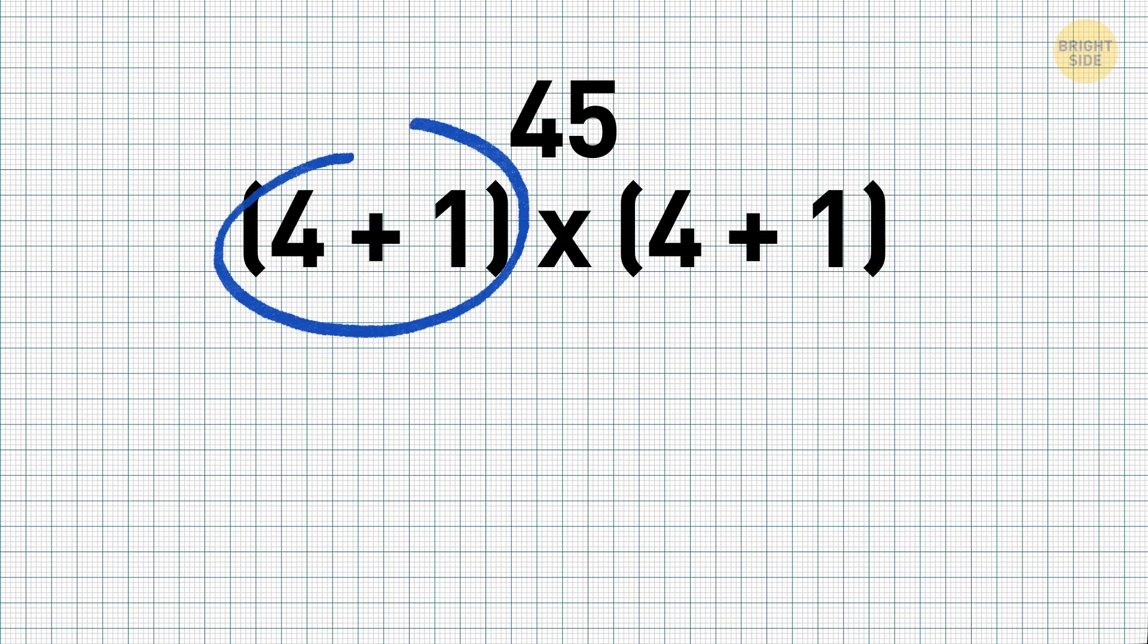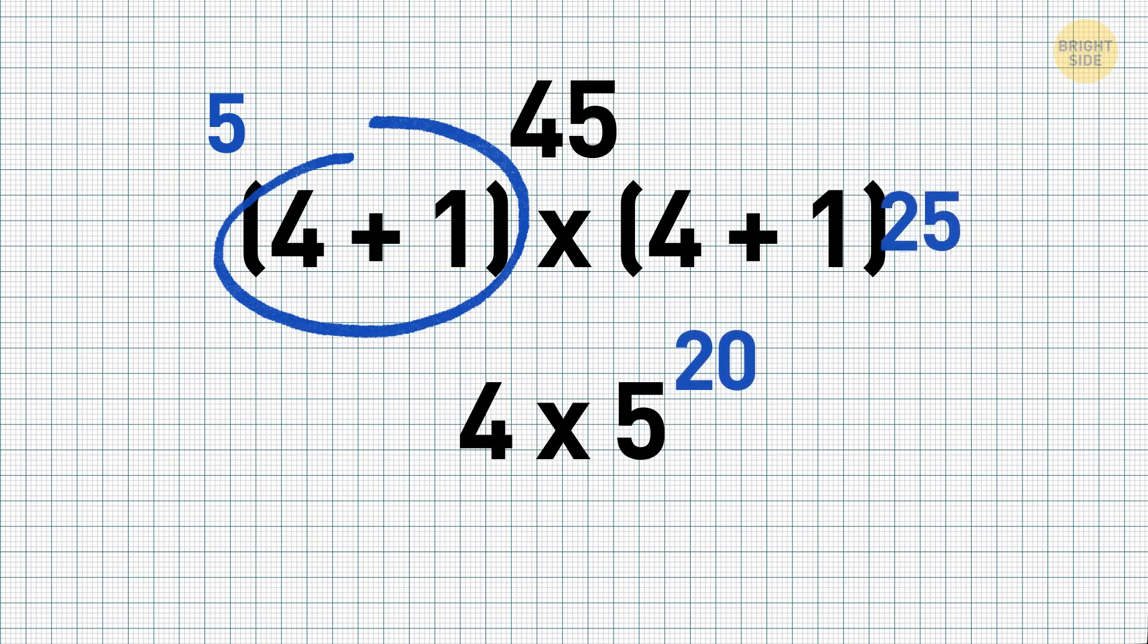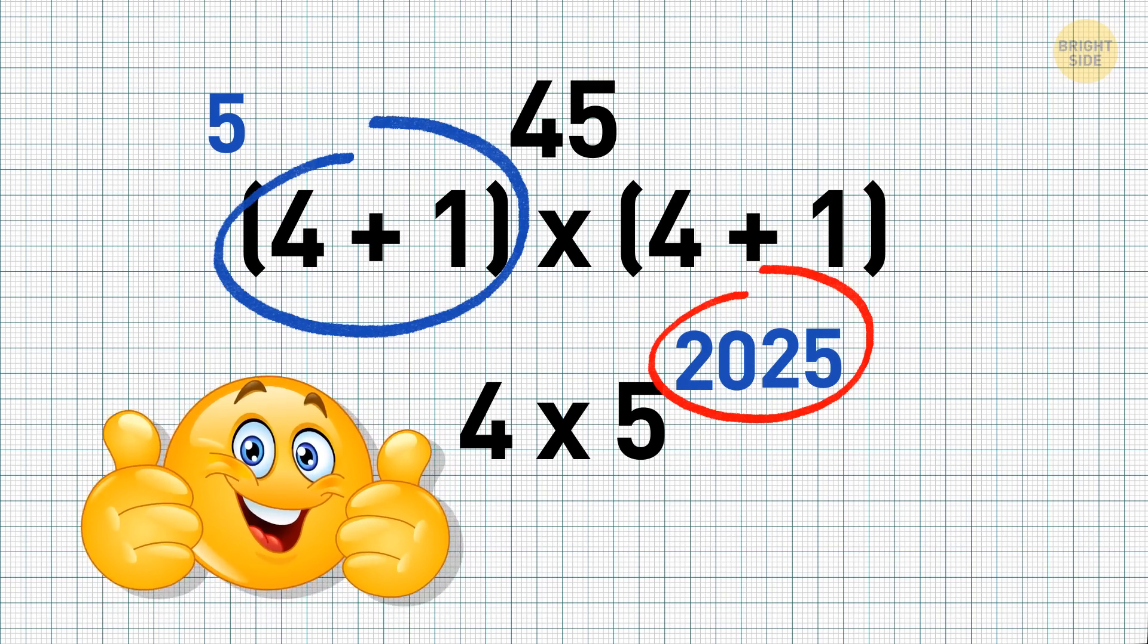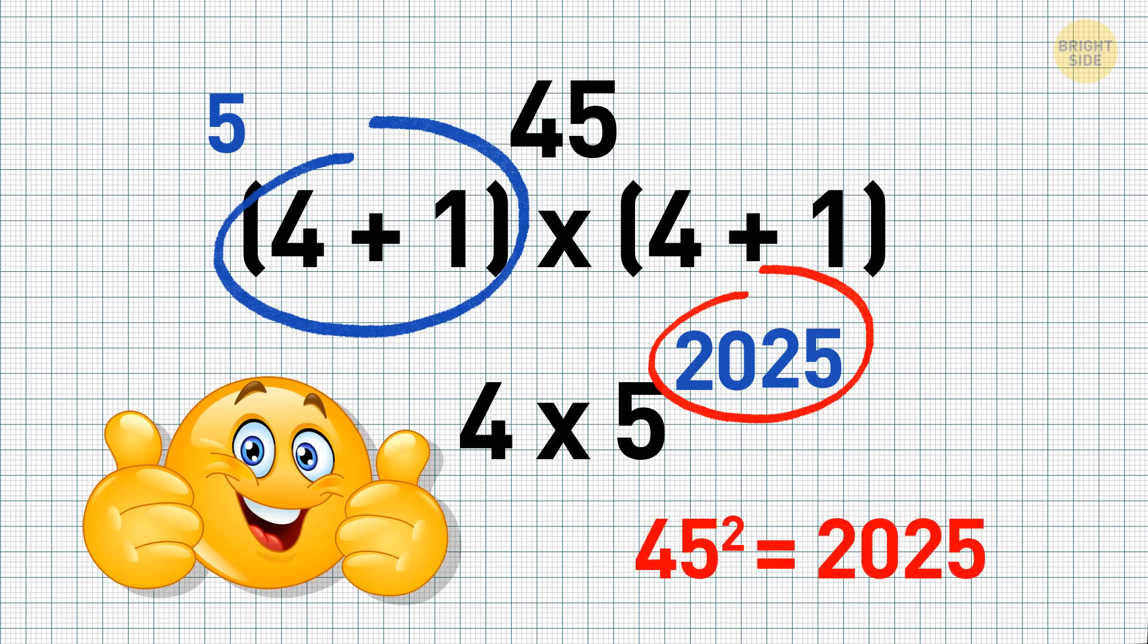That is, 4 plus 1 is 5. So, you need to multiply 4 by 5, getting 20. Now add 25 at the end, and you get 2025. That's it. Here's your answer. 45 squared is 2025. Check it with a calculator if you don't believe me.